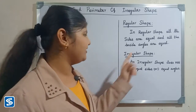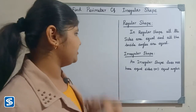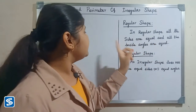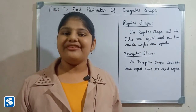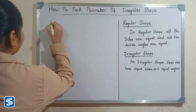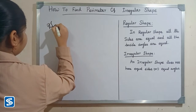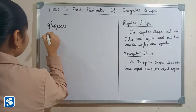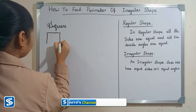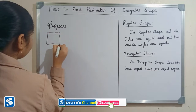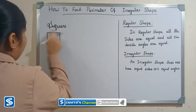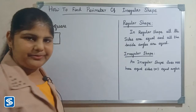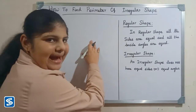First we will see what is meant by regular shape. In a regular shape, all the sides are equal and all the inside angles are equal. For example, a square — in a square all the sides and angles are equal, so a square is a regular shape.